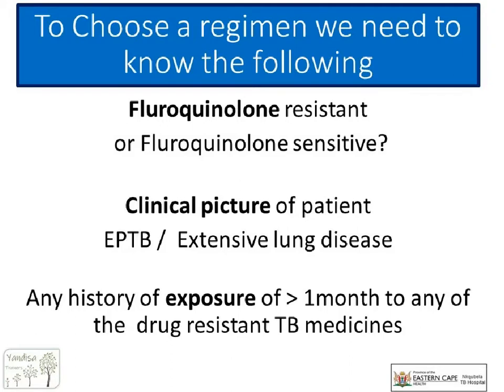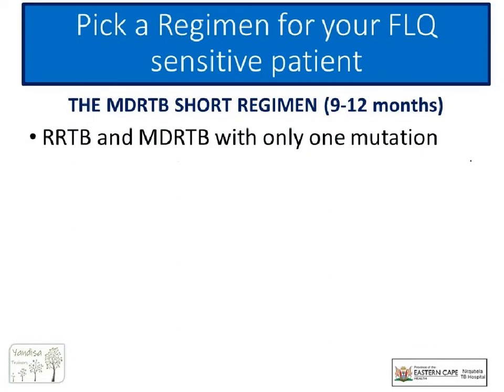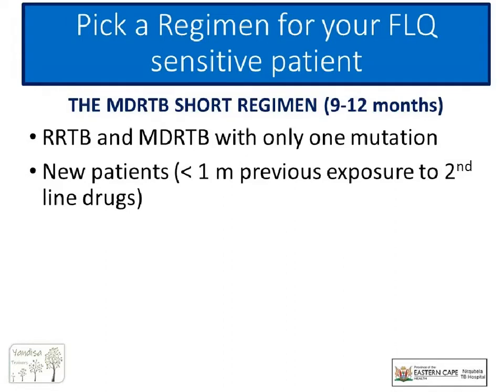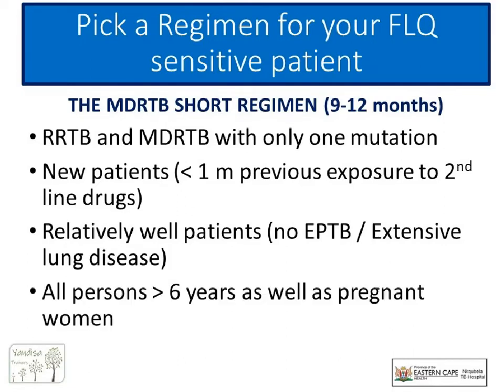Armed with this information, you can now choose between the MDR-TB short regimen or the long basic regimen. The short regimen is reserved for uncomplicated, well patients. The patient will usually have RR-TB or, if they have MDR-TB, it will be with only one mutation. They will be new patients with no significant exposure to second-line drugs, clinically well, no extra-pulmonary TB, no extensive lung disease, and all must be over six years of age.